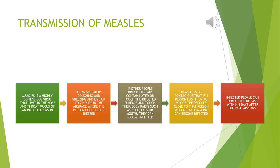Transmission of measles. Measles is a highly contagious virus that lives in the nose and throat mucus of an infected person. It can spread by coughing and sneezing and live up to two hours in the airspace where the person coughed or sneezed. If other people breathe the contaminated air or touch an infected surface and then touch their nose, eyes, or mouth, they can become infected.